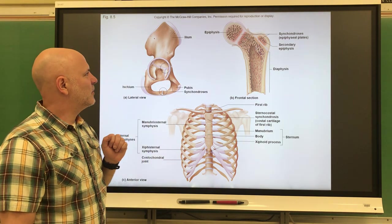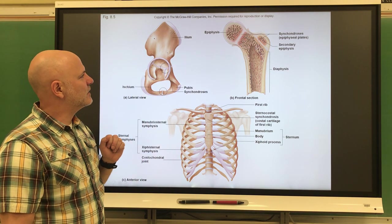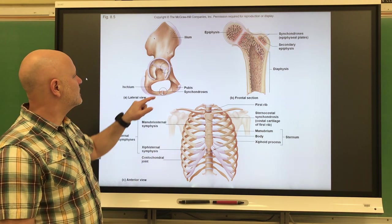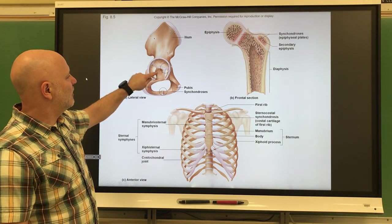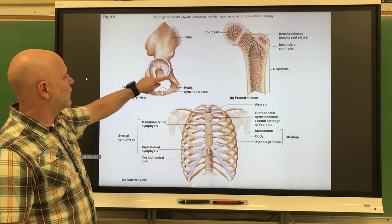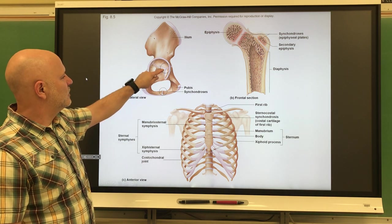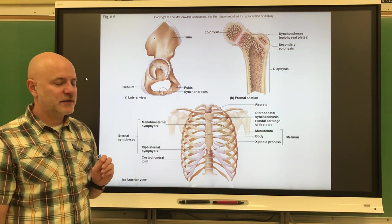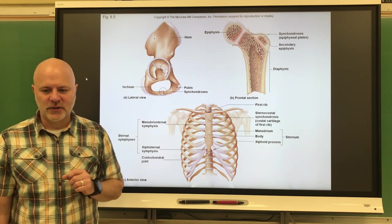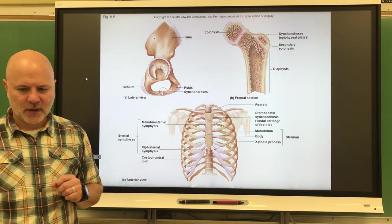The epiphyseal plates are another example of synchondrosis. Our pelvis is made of three bones that fuse together, and we have a synchondrosis before the fusion of those.